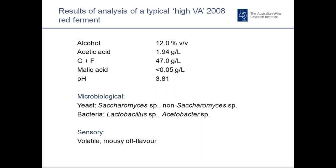In 2008 we had several stuck ferments with very high VAs. This slide shows the results of a typical high-VA stuck ferment — the VA is almost 2 grams per litre, which is certainly going to inhibit fermentation. pH 3.8 is quite high and encourages the growth of non-Saccharomyces yeast, Lactobacillus bacteria, and Pediococcus bacteria. Apart from being volatile, many of those high-VA wines also exhibited mousy off-flavour.